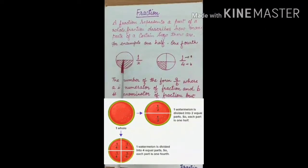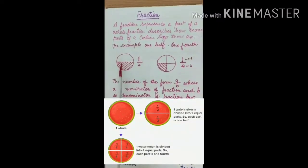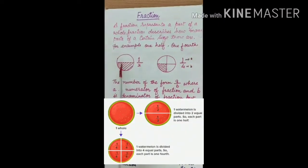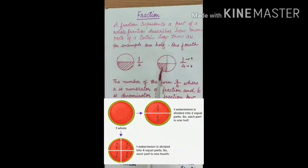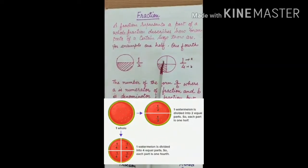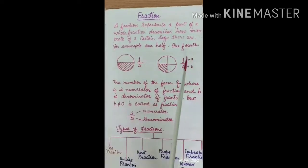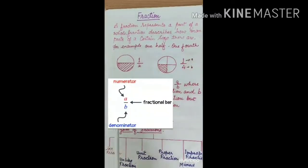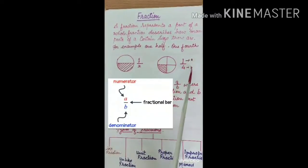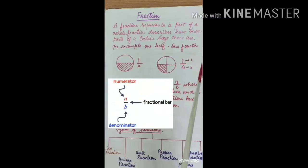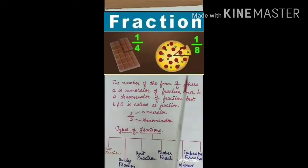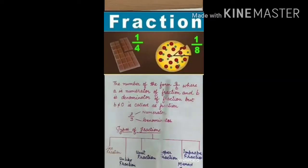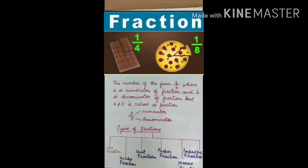This circle is divided into two equal parts. One of its parts is shaded, so this is one half. This circle is divided into four equal parts. One part is shaded, so this is one fourth. A number of the form A upon B, where A is the numerator and B is the denominator, but B is not equal to zero, is called a fraction.